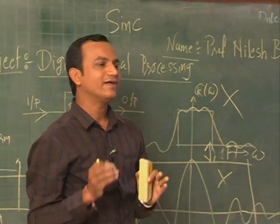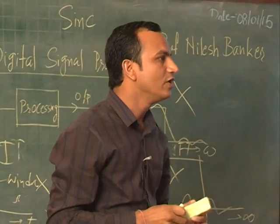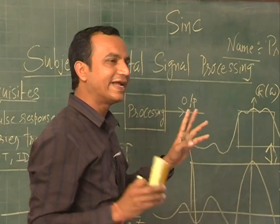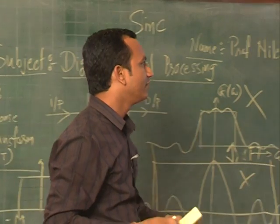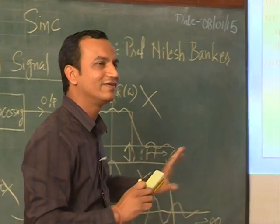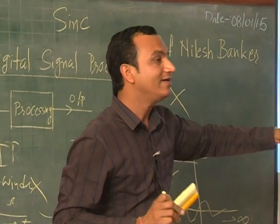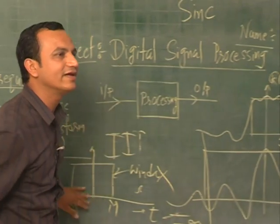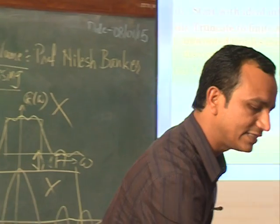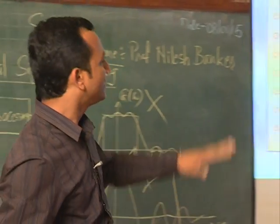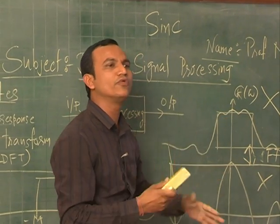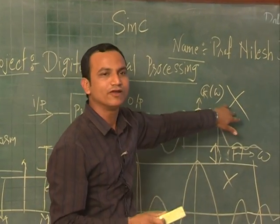To design an FIR filter using the windowing method, you need to do three steps: start with the ideal response, truncate it to finite length, and modify your original response to the practical one. As an example, I have taken the rectangular window function, but there are other window functions available in digital signal processing that can give better characteristics and improve the desired response further.